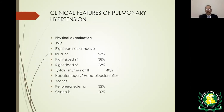On physical examination, findings depend on the stage of pulmonary hypertension. Initially one hears only a loud P2, but as disease advances there may be a right-sided S3 or S4 related to right heart failure, a pansystolic murmur of tricuspid regurgitation, elevated JVD, abdominal distension due to ascites, and peripheral edema.